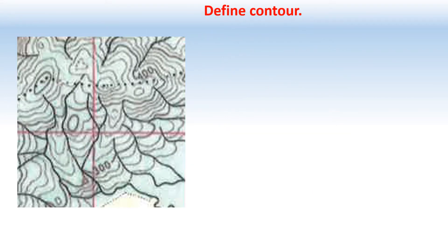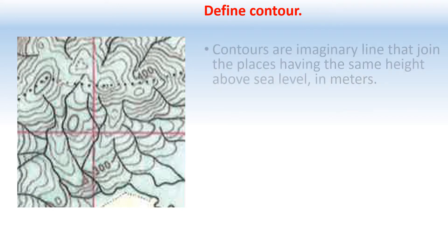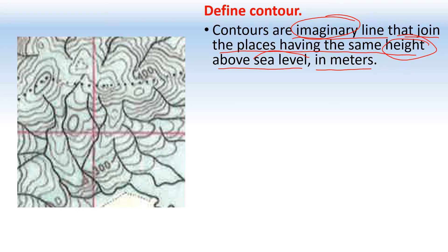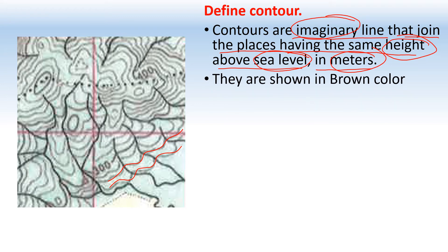A very common question: what is a contour? Contours are imaginary lines that join places having the same height above sea level, measured in meters. These lines are shown in brown color — adding this will make your answer more complete.